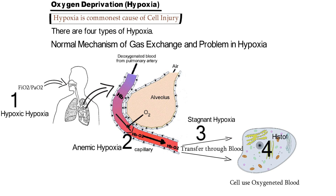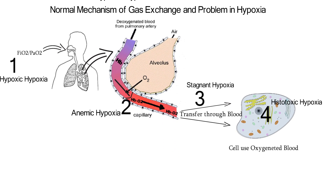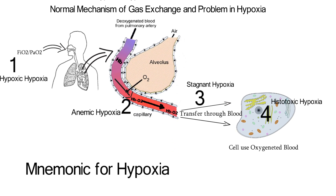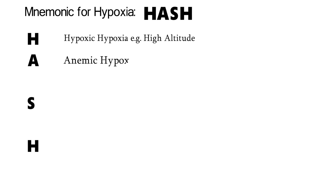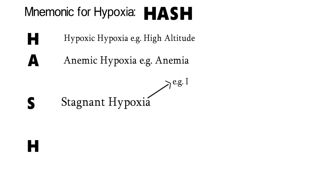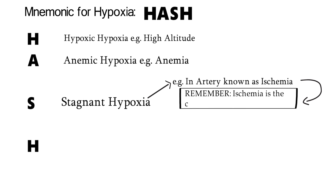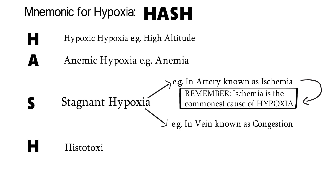The last possibility is when the cell refuses to take oxygenated blood — this is histotoxic hypoxia. You can remember the types of hypoxia by the mnemonic HASH: H stands for hypoxic hypoxia, example being high altitude; A stands for anemic hypoxia, example being anemia; S stands for stagnant hypoxia — if stagnant hypoxia occurs in an artery, we call it ischemia. Remember, ischemia is the commonest cause of hypoxia — this one is high yield, do not confuse with the commonest cause of cell injury. If stagnant hypoxia occurs in a vein, we call it congestion. H stands for histotoxic hypoxia, example being cyanide poisoning.